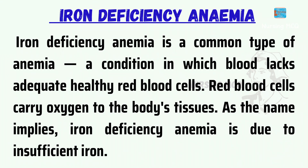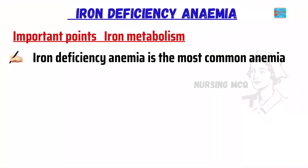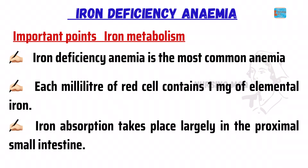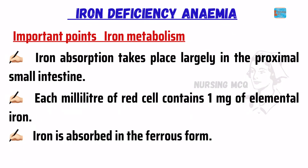Next we can see about iron metabolism. Iron deficiency anemia is the most common anemia. Each milliliter of red cell contains one milligram of elemental iron. Iron absorption takes place largely in the proximal small intestine. Iron is absorbed in the ferrous form.